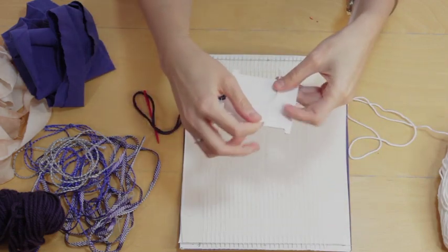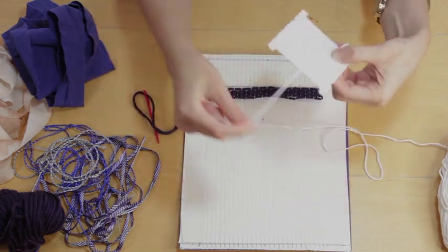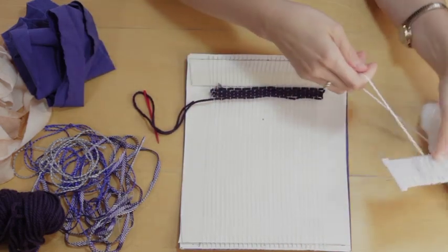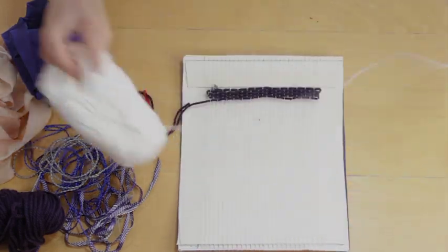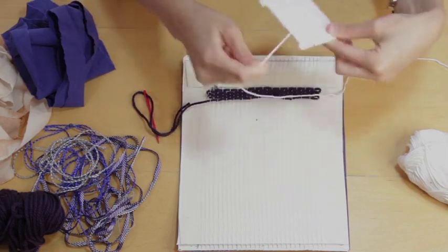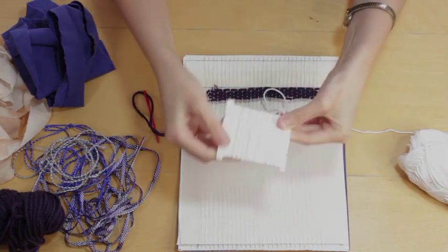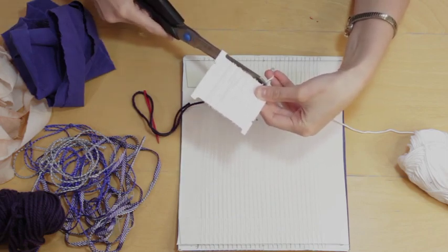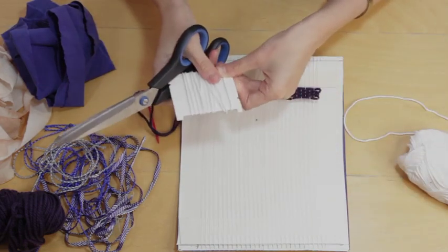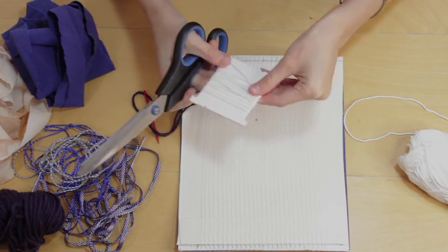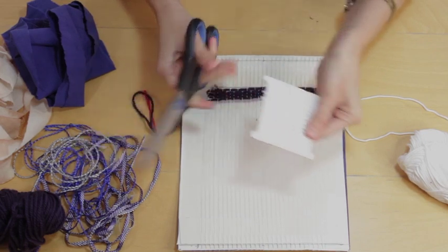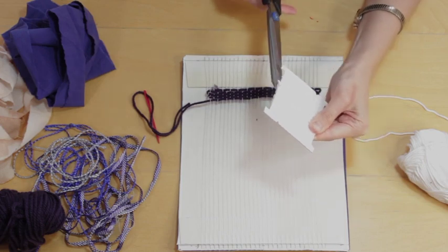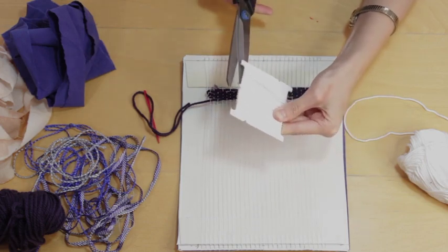What I'm going to do is take my little card, I'm going to wrap around it a few times and make sure I finish on the same side I started on. Then I'm going to snip it there, and then I'm going to hold this edge and I'm going to get my scissors in this end and I'm going to snip across.